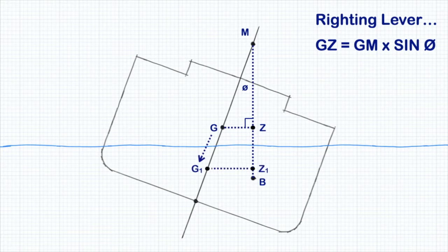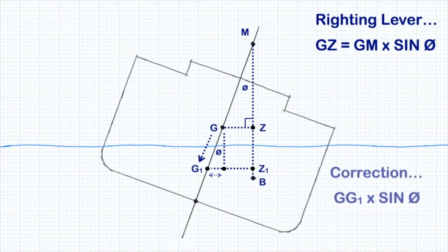If we draw another right angle triangle representing the shift in G, we can calculate a correction to apply to the original GZ using the formula G to G1 times the sine of the angle of heel.